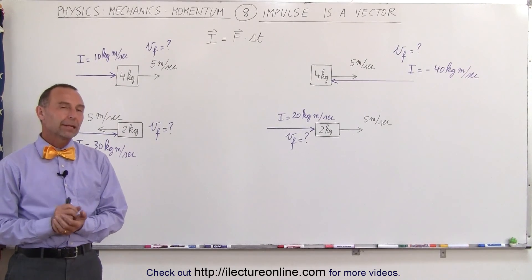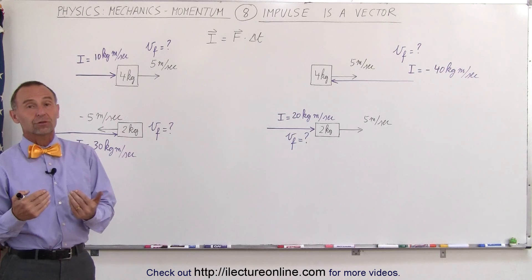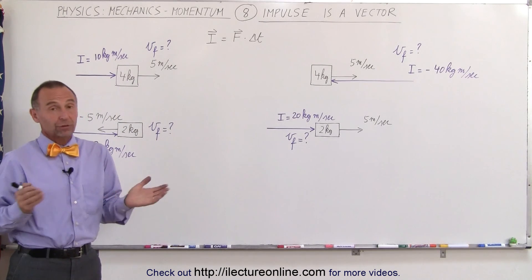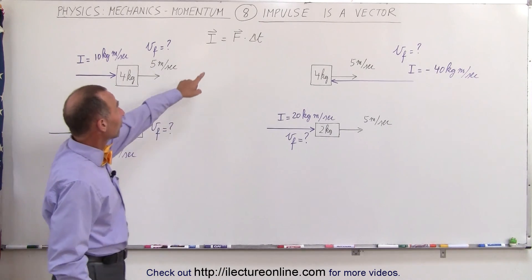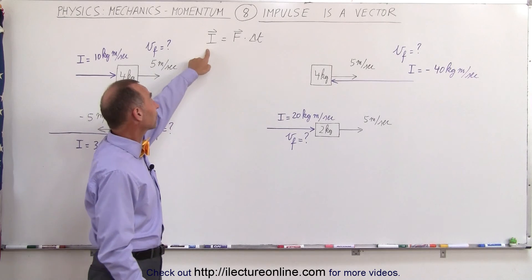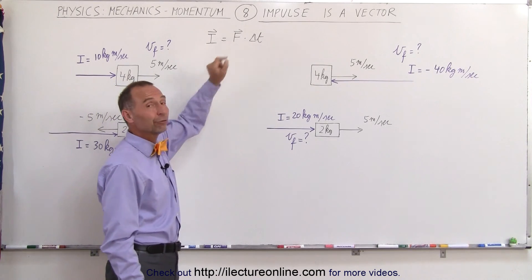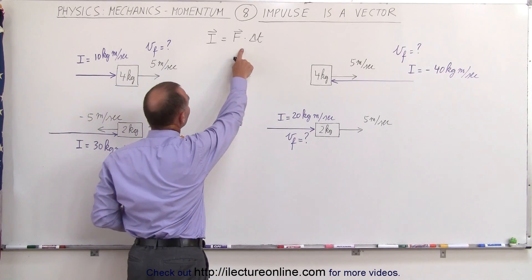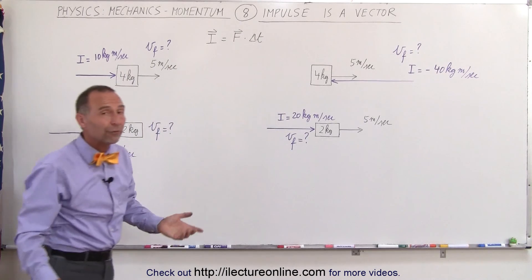Welcome to ElectronLine. Remember that impulse is actually a vector. Just like force is a vector, impulse is a vector as well, so direction is very important. Technically we should write impulse with a little arrow on top indicating it's a vector, because it's set equal to force times delta t, and we know that force is a vector as well. Therefore the left side must equal the right side — since the right side is a vector, the left side is a vector as well.